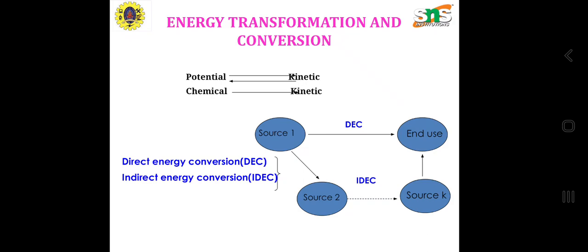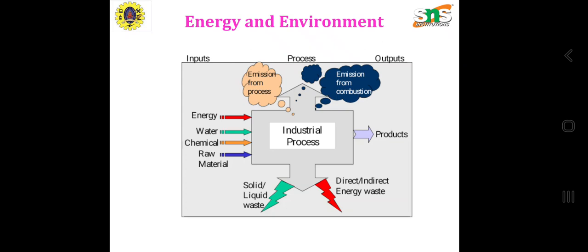Direct energy conversion and indirect energy conversion. If source 1 is directly utilized by the energy end user, it is direct energy conversion. If source 2 is converted into source K, then it can be utilized for any processing - we call that indirect energy conversion.